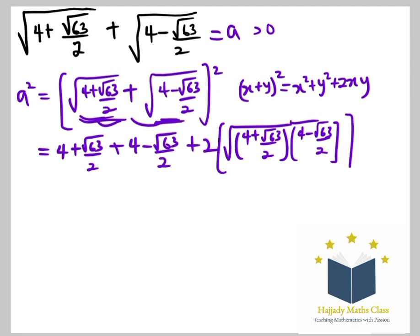So root 63 over 2 times root 63 over 2 is 63 over 2. So my A squared is going to be 4 plus 4, which is 8 plus 2. So multiplying this out, I'm going to have root 4 times 4 is going to be 16 minus...